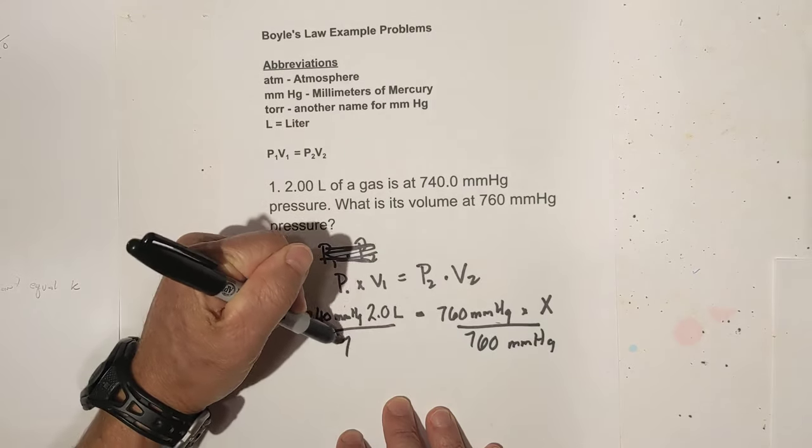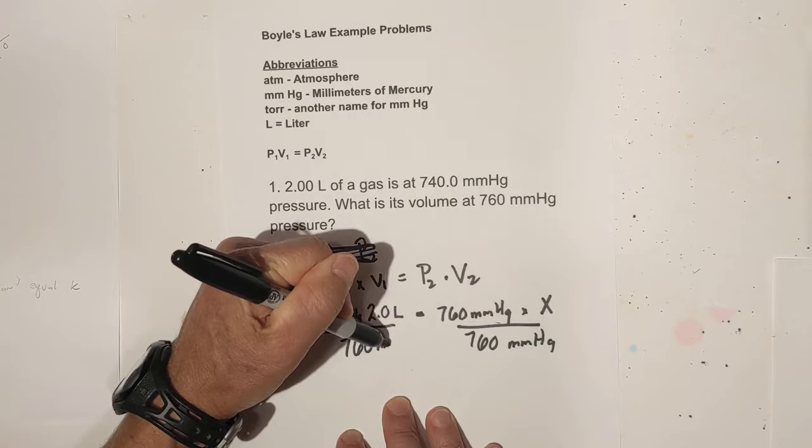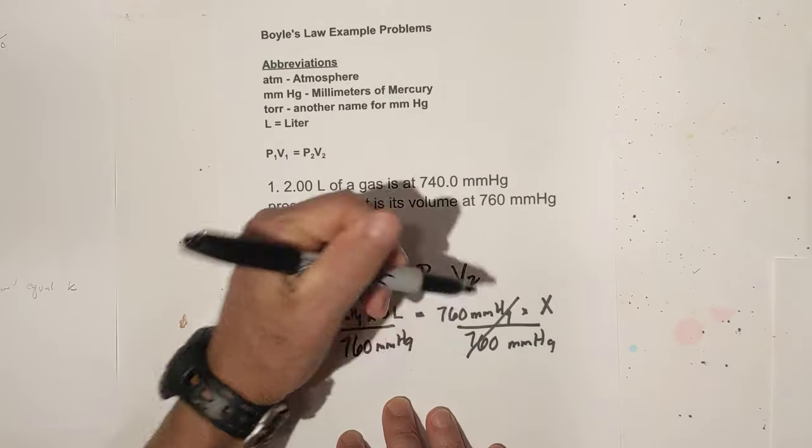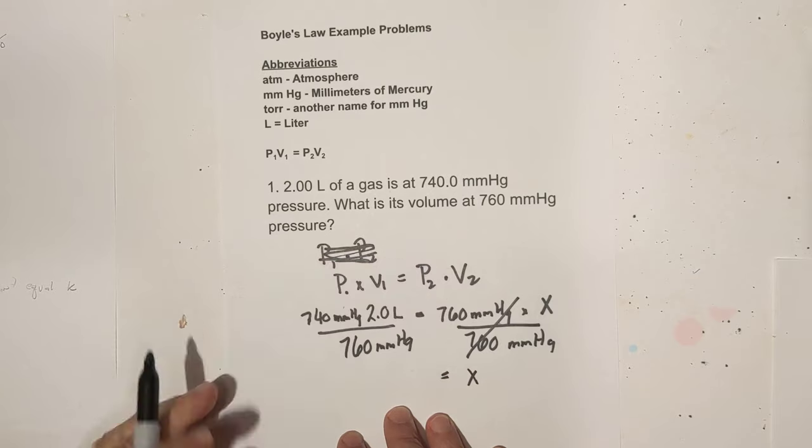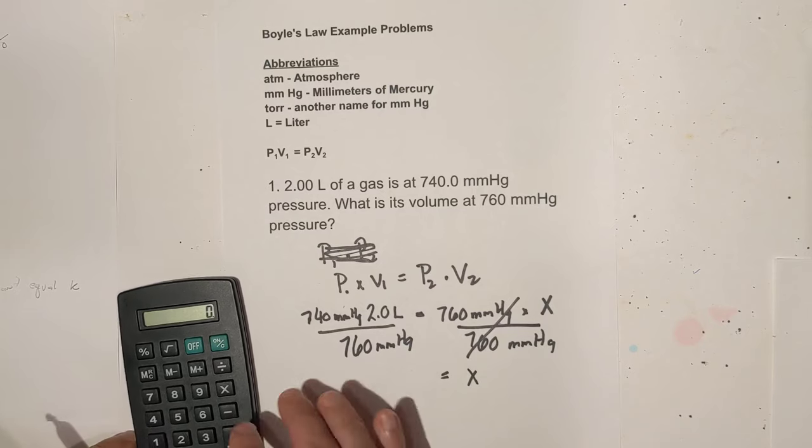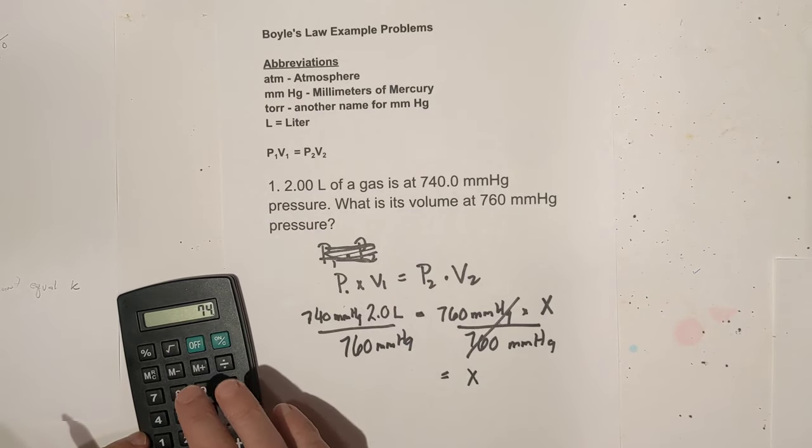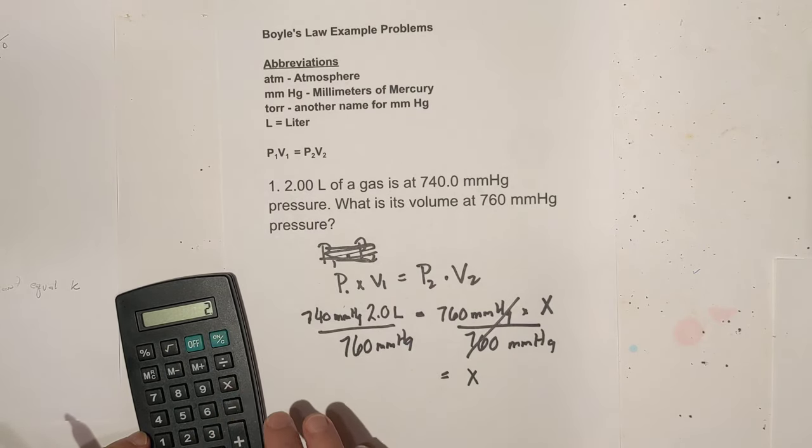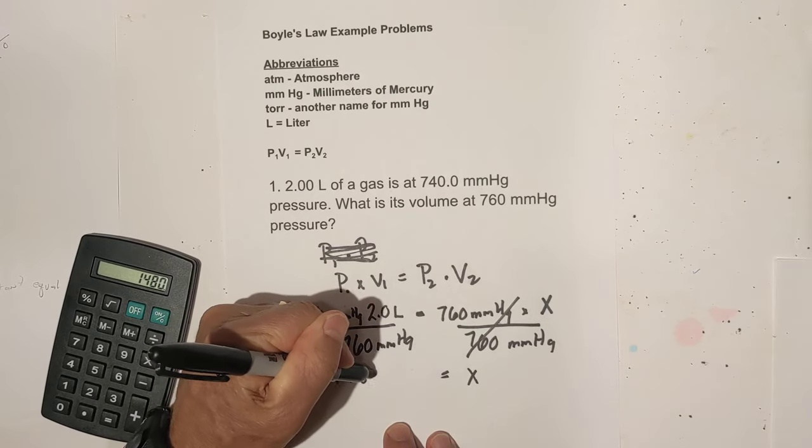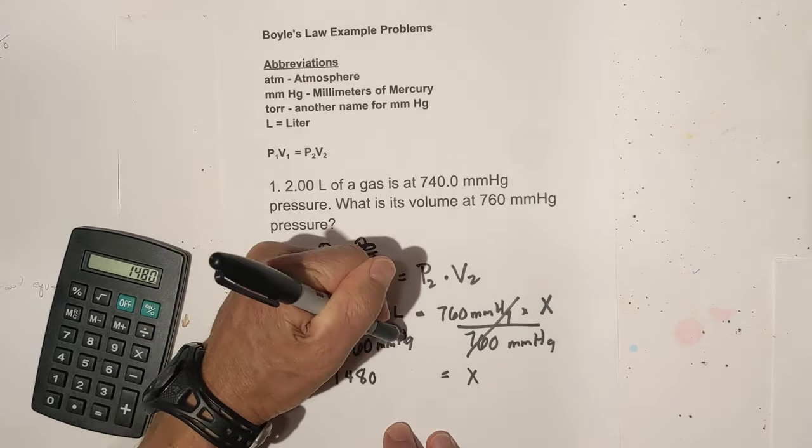Now all we do is we divide each side by 760, and I'm writing my units of measure in there. These cancel, so that gives you x is equal to, now all we do is solve this, and I have my calculator here. So I'm going to go 740 times 2, and that equals 1480.